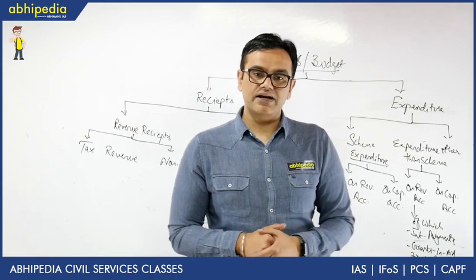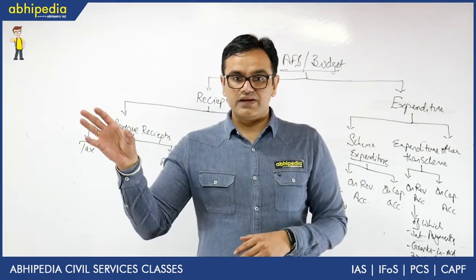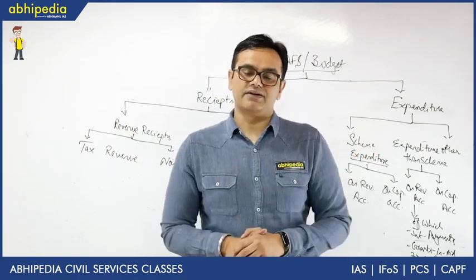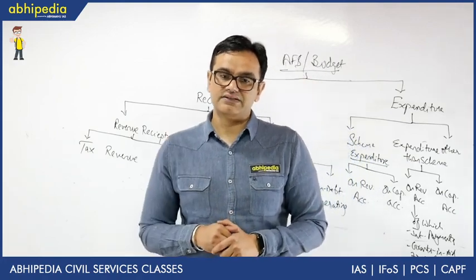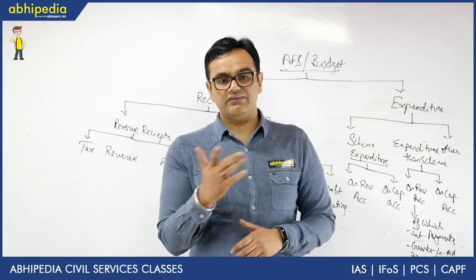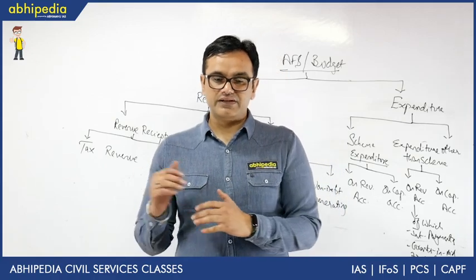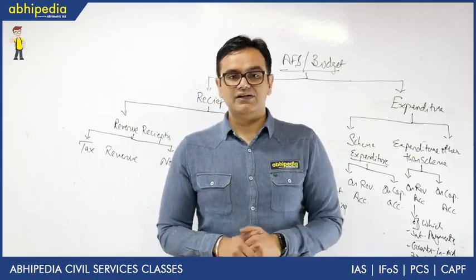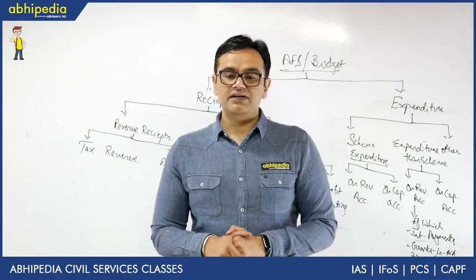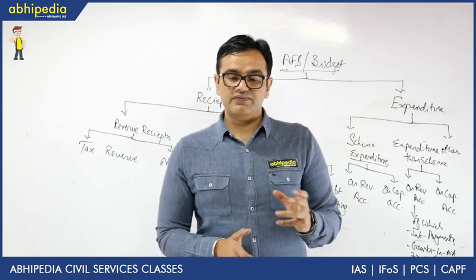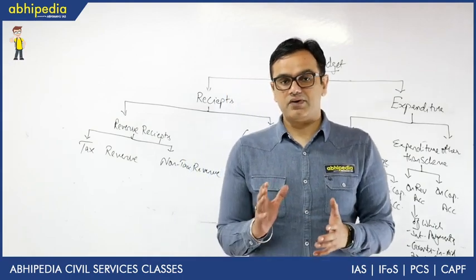The second aspect — grants made for creation of capital assets — is how the effective revenue deficit is calculated. Revenue deficit minus grants made for creation of capital assets gives you the effective revenue deficit. There is a separate video about fiscal deficit, revenue deficit, and primary deficit. These three are very important for UPSC, and questions are frequently asked about fiscal deficit, revenue deficit, and primary deficit when it comes to budgetary terminology.